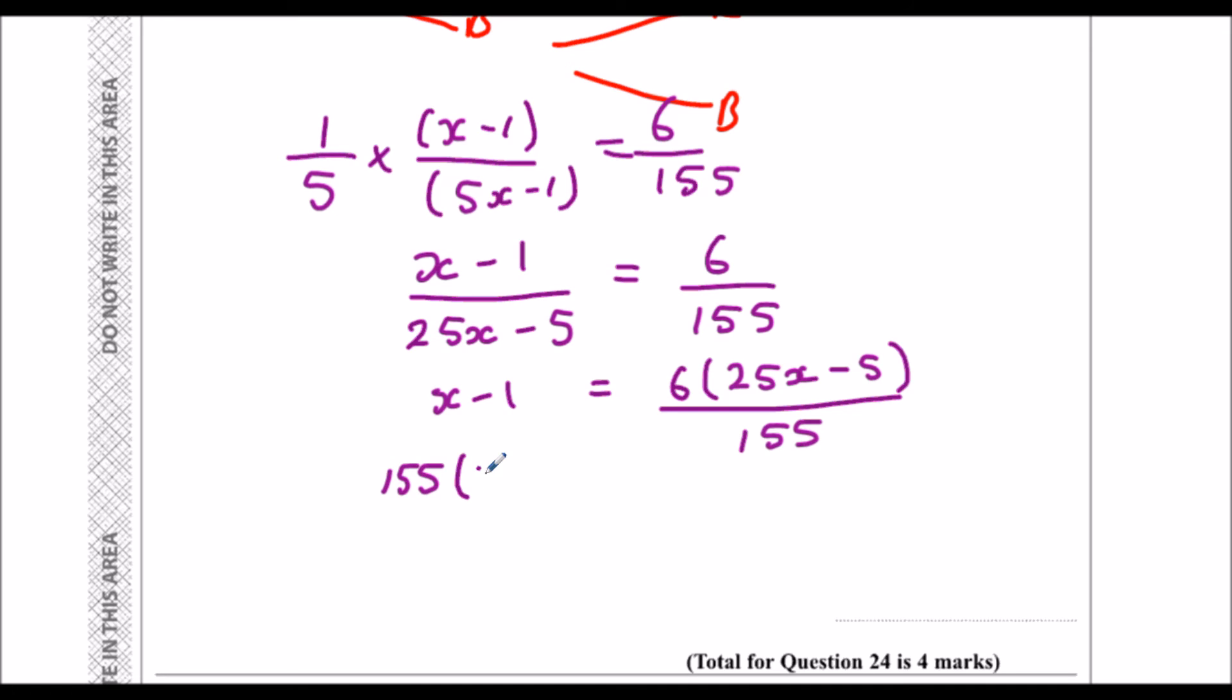So 155 times x minus 1 equals 6 lots of 25x minus 5. Expanding the brackets, 155x minus 155 equals 150x minus 30.